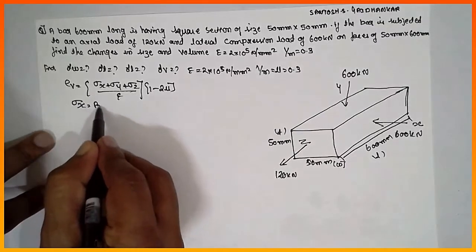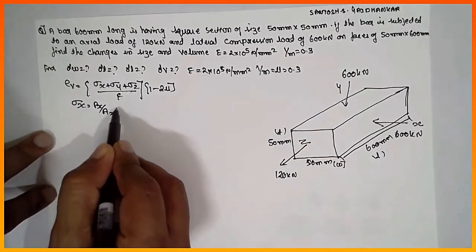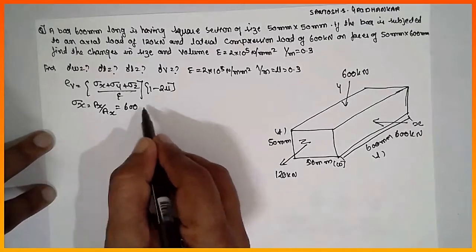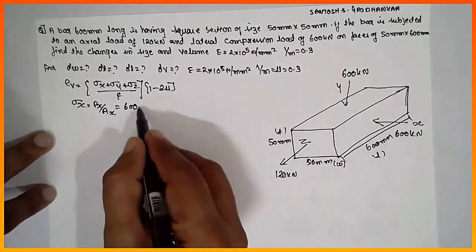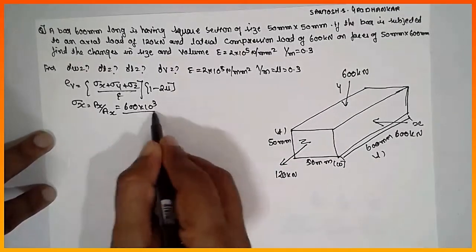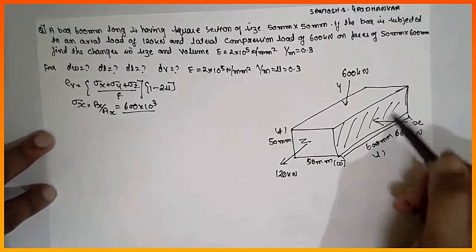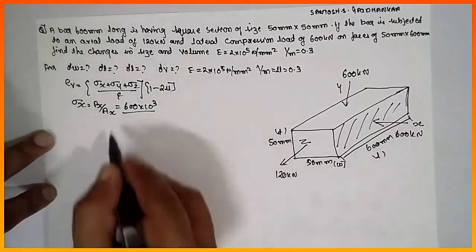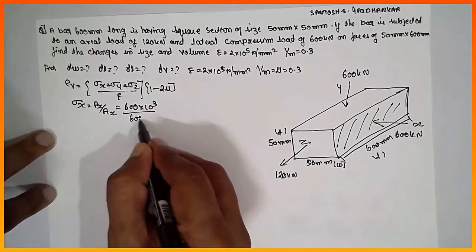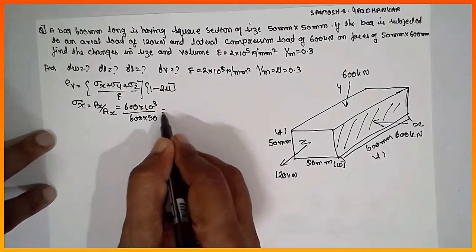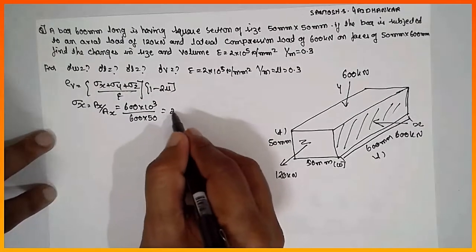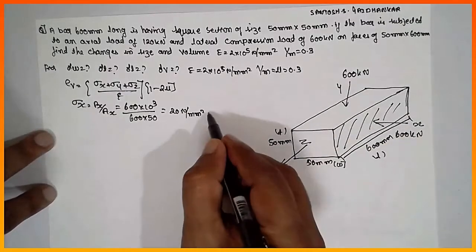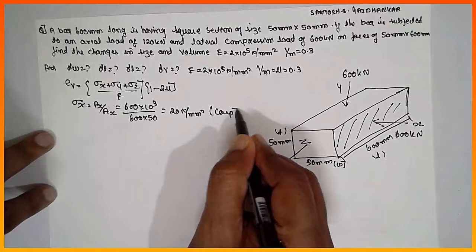What is σx? σx = Px / Ax. The load in the X direction is 600×10³ N. The area is 600 mm × 50 mm (thickness). So σx = 600×10³ / (600×50) = 20 N/mm². But it is compressive in nature, so σx = −20 N/mm².